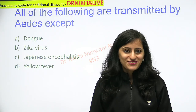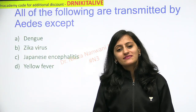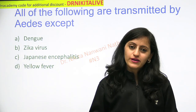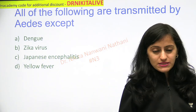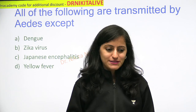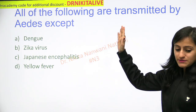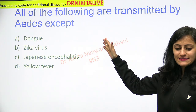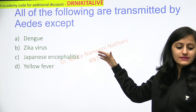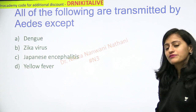Hello everyone, this is Dr. Nikita here. Today in this video we are going to learn a quick mnemonic on the diseases transmitted by vector, particularly the Aedes mosquito. The question here is: all of the following are transmitted by Aedes except — is it dengue, is it Zika virus, is it Japanese encephalitis, or is it yellow fever?